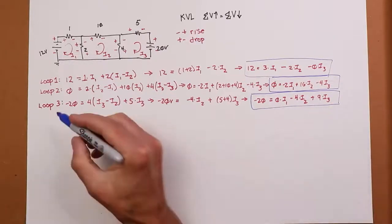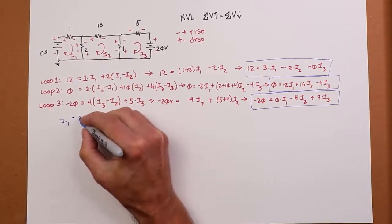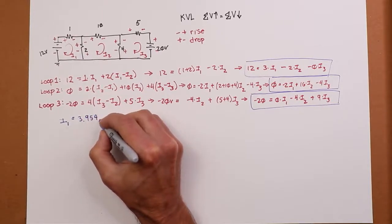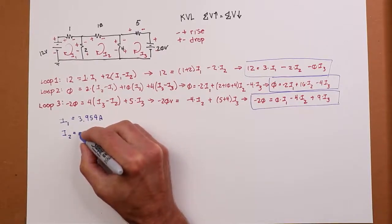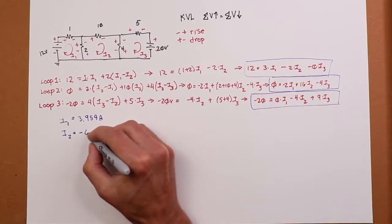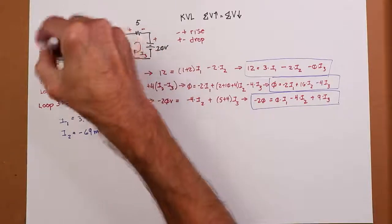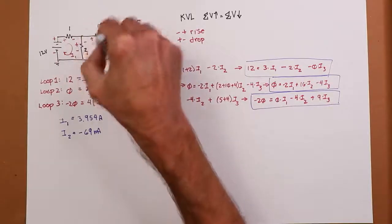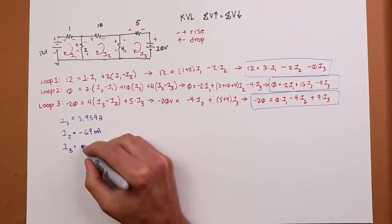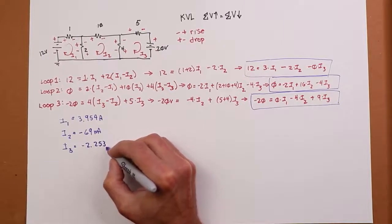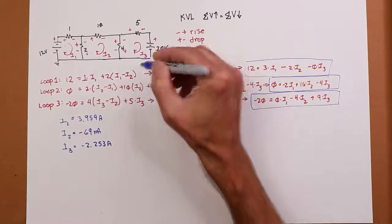So, we solve this. And when we do, I1 turns out to be 3.954 amps. I2 works out to just shy of 69 milliamps, negative. So, that tells me that the current's really going in the other direction. This is positive. So, I know I1 really is going like this. I2 is negative, so it's really going like this. And then the I3 is a negative 2.253. Same deal. In other words, it's really going this way.